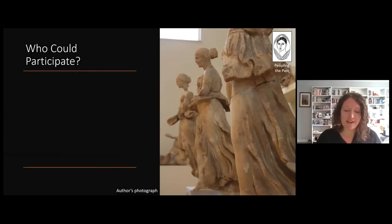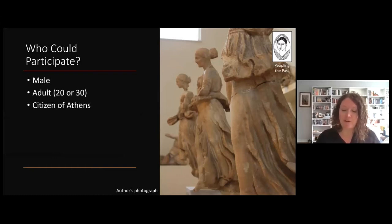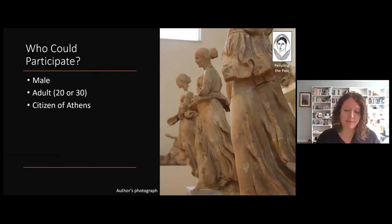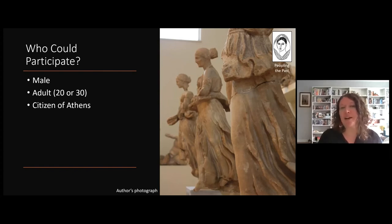To be an active participant in Athenian democracy, you needed three things: you needed to be male, an adult — either 20 or 30 years old depending on the position — and you had to be a citizen of Athens. Being a citizen wasn't a simple thing. You had to be the son of an Athenian father, and later both your parents needed to be citizens. As a citizen, you were also part of one of 10 Athenian tribes. This means Athenian democracy did not allow a huge part of the population to participate, including immigrants, women, freedmen, and slaves. Most scholars think that probably only between 10 and 30 percent of the population could participate, depending on the time period.